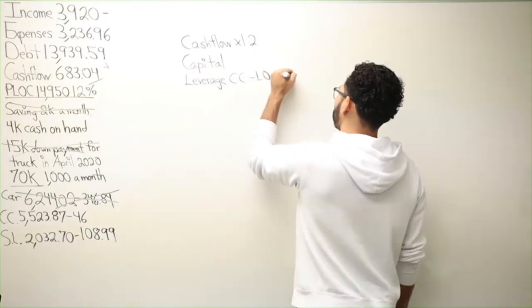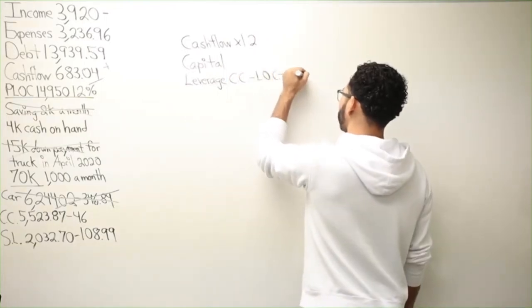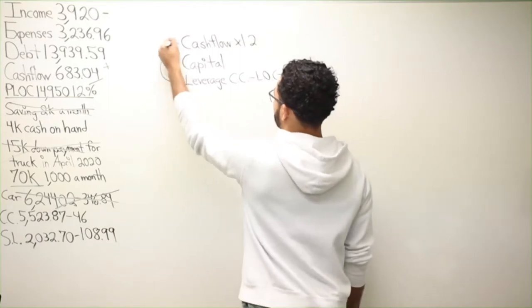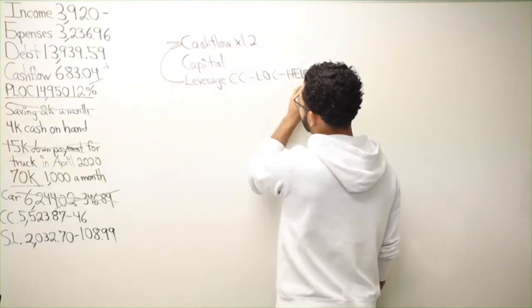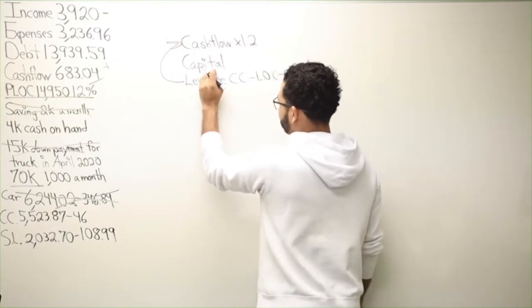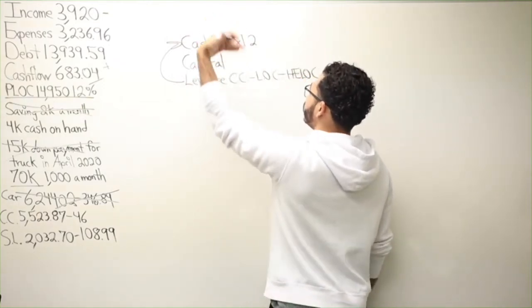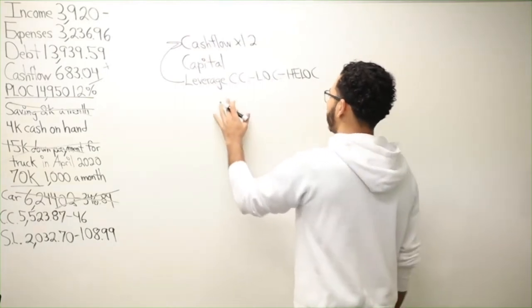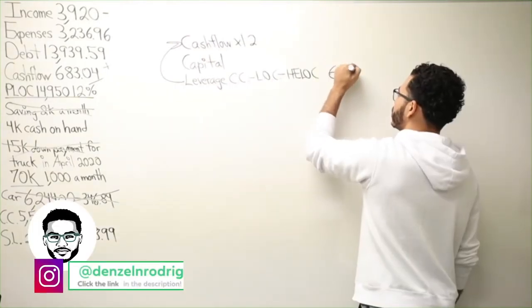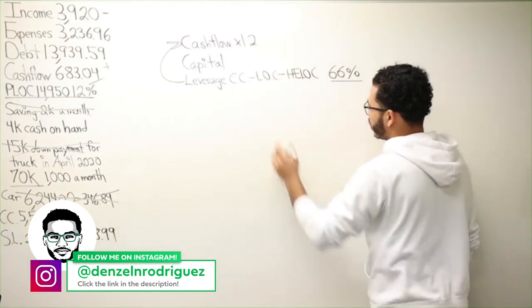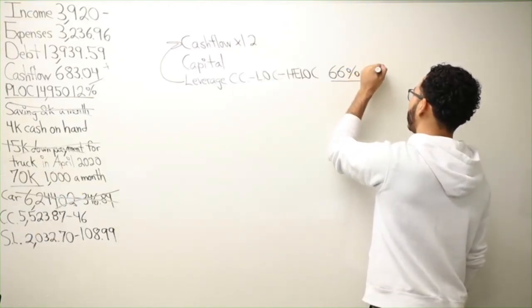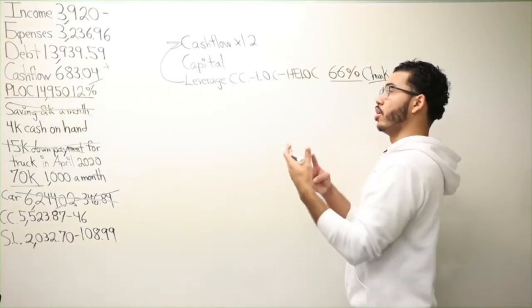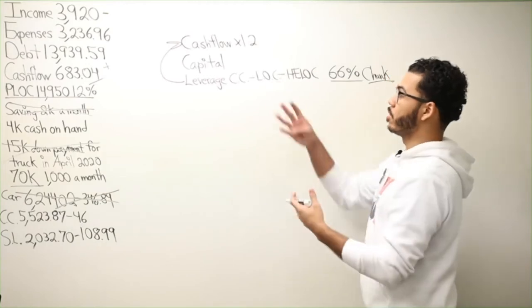And then we're also looking at your leverage. What do you got? You got a credit card, you have a line of credit, you have a HELOC to improve the situation? Let's say this number is not great but you do have good leverage and existing capital, then that would supersede your cash flow times 12. Then, what is 66% of your line of credit? That's going to determine what my chunk would be if I'm using a line of credit or HELOC to fund a policy.